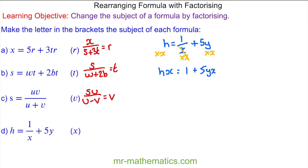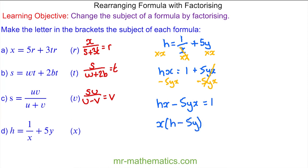Now we need to make the x's on one side, so we'll move the 5yx to the other side by subtracting it from both sides — subtraction because that's the opposite of addition — so hx minus 5yx is equal to 1. We factorise the left hand side: x lots of h minus 5y is equal to 1. Dividing both sides by h minus 5y gives x is equal to 1 over h minus 5y.